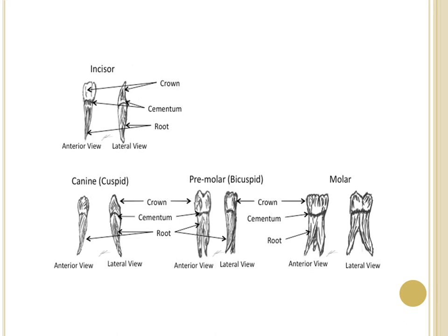The premolars or bicuspids have two distinct cusps relative to the canine with its single cusp. The premolars grind and pulverize soft pulpy material into long strands. The incisors, cuspids, and bicuspids usually undergo a secondary tooth eruption where we have the immature followed by the permanent tooth.